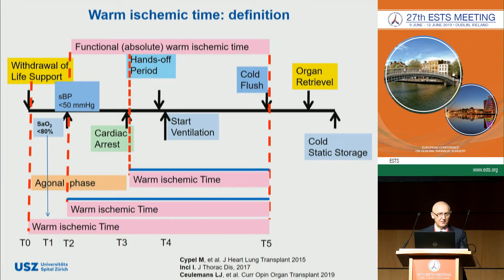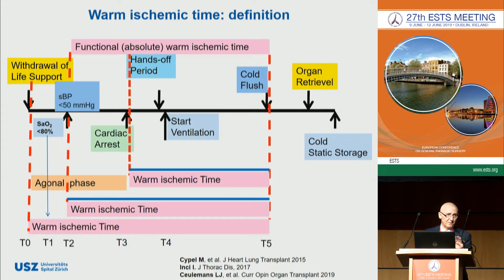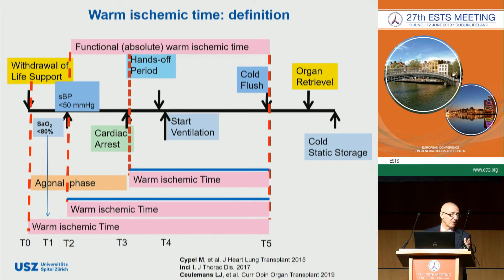An important issue in DCD donors is the definition of warm ischemic time, which differs among centers. Some centers calculate warm ischemic time from the withdrawal of life-sustaining therapies to cold flush; some start from cardiac arrest to cold storage; and some start from when systolic blood pressure falls to 50 mmHg to cold flush. These time points are also suggested in the ISHLT DCD registry report, which also defines several intervals.